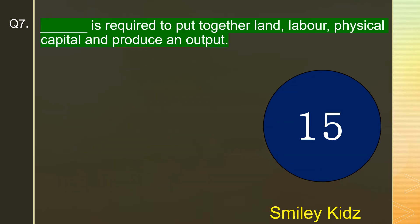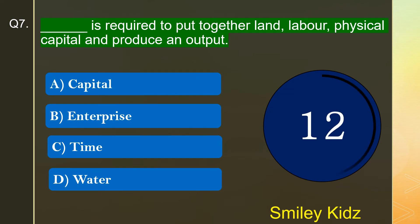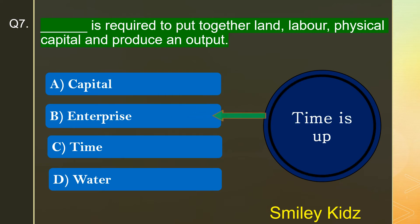Question number 7. Dash is required to put together land, labor, physical capital and produce an output. The options are A. Capital, B. Enterprise, C. Time, or D. Water. Your time starts now. Your time is up and the right answer is option B. Enterprise. Enterprise is required to put together land, labor, physical capital and produce an output.